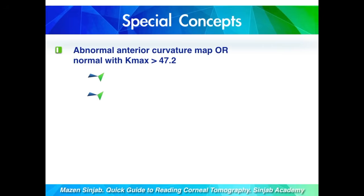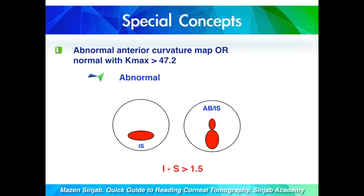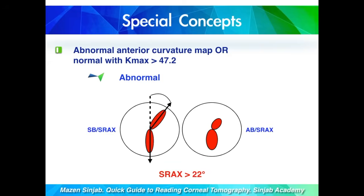Starting with the first point: abnormal anterior curvature map, or a normal curvature map with Kmax above the cut-off point. So we have abnormal, or normal with Kmax above 47.2 diopters. Starting with the abnormal — this is a review of the abnormal patterns. When the patient has inferior steep or asymmetric bowtie with I-S more than 1.5 diopters, it is considered abnormal.